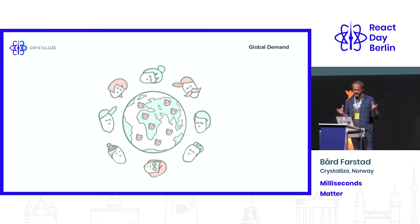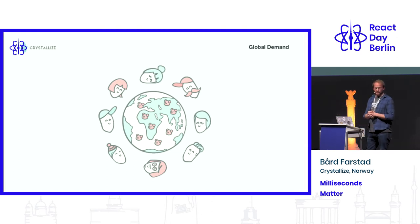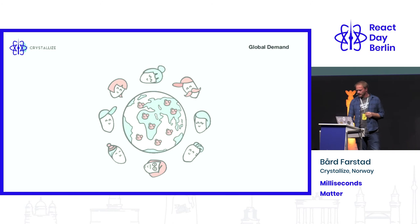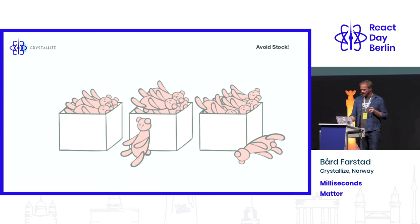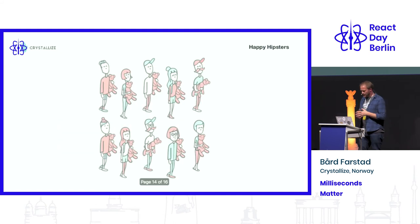You need to check the ping times in Tokyo, in Los Angeles, and in Frankfurt, because if you have global demand you need to deliver on latency globally. You don't want a bunch of teddy bears that are unsold — you want teddy bears getting to the hipsters.